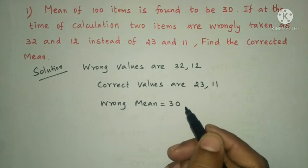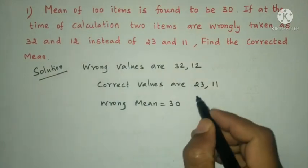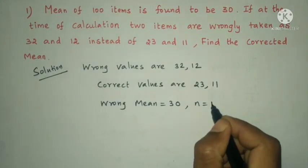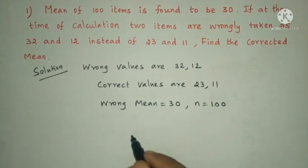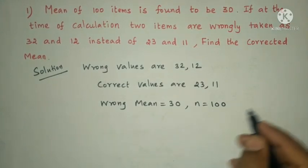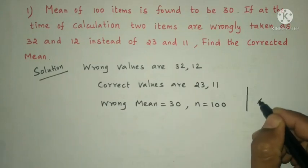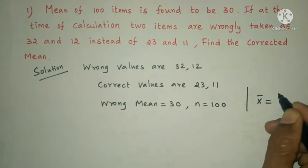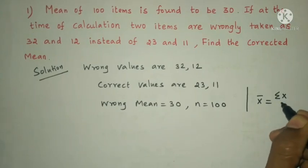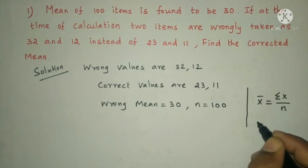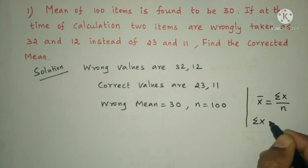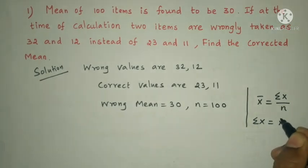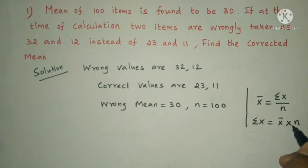Number of data n = 100. The formula is x̄ = Σx / n, so Σx = x̄ × n.